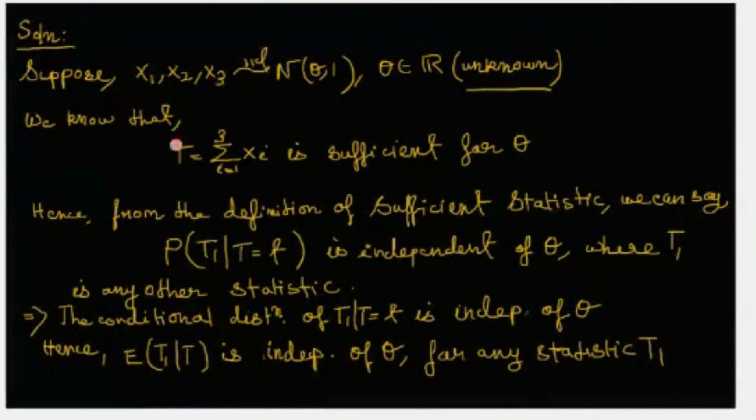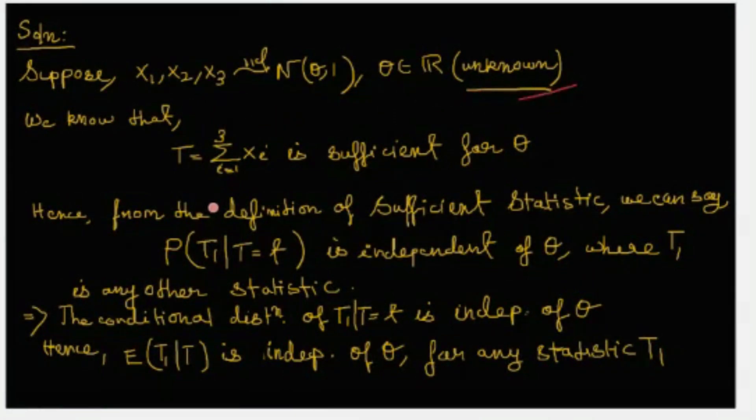Suppose x1, x2, x3 follow iid normal θ, 1 distribution where θ belongs to R is unknown. We know that for this case T equals summation xi is sufficient for θ. Hence from the definition of sufficient statistics we can say that probability of T1 given T is independent of θ, where T1 is any other statistic. This means that the conditional distribution of T1 given T is independent of θ, hence expectation of T1 given T is independent of θ for any other statistic T1.